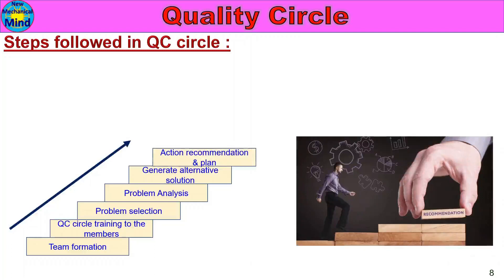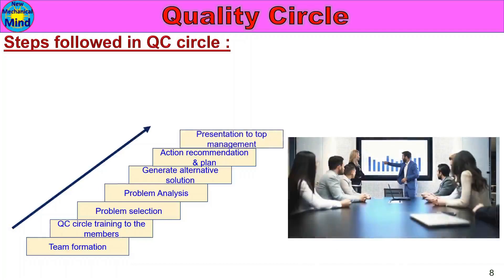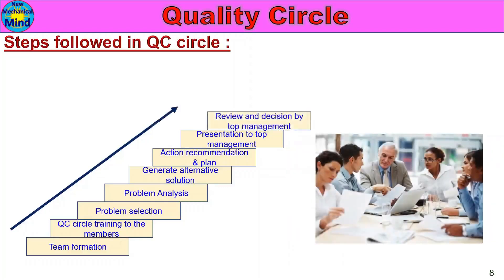After generating alternative solutions and confirming a good result, the team will Recommend and Implement a Plan. This is then followed by Presentation to Top Management — explaining all benefits and any savings in detail. Top Management reviews the QC Circle's action plan.